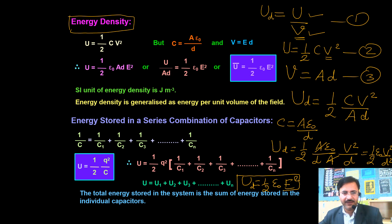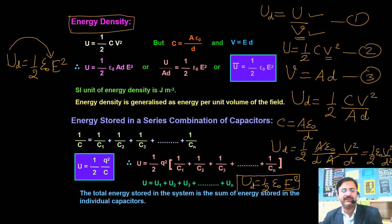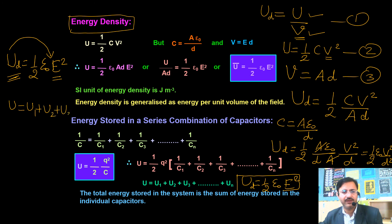So the formula of energy density is u = ½ε₀E². Energy stored in a capacitor is always in the form of an electric field — remember this for fill-in-the-blank questions. When capacitors are connected in combination, the total stored energy can be found by adding the energies stored in individual capacitors.